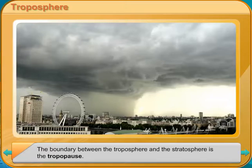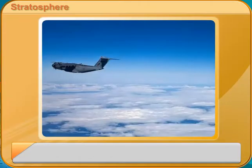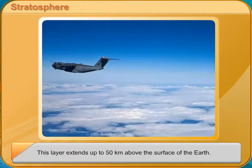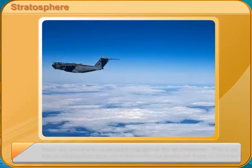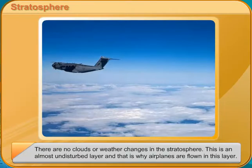This layer has the band of ozone gas which protects us from the harmful ultraviolet rays of the sun. The boundary between the stratosphere and the mesosphere is the stratopause.